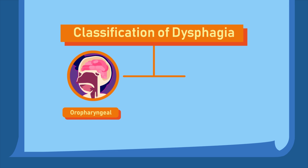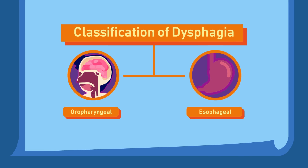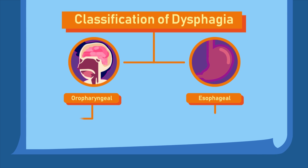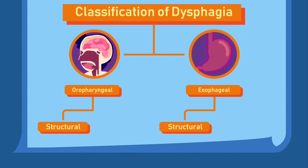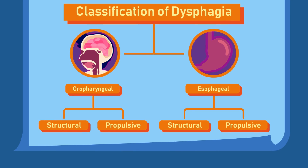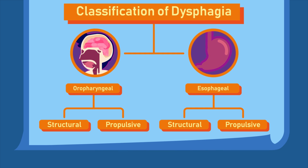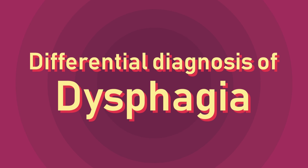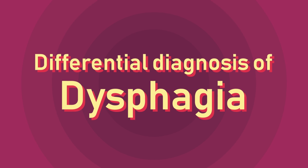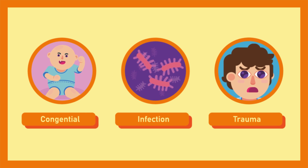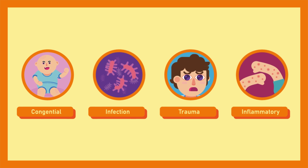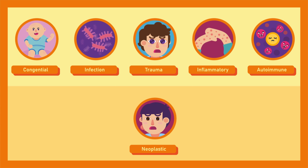Dysphagia is classified according to site — whether it is oropharyngeal or esophageal — and the type of disorder, whether it is a structural disorder or a motility or propulsive disorder. The differential diagnosis for dysphagia can also be divided according to cause: congenital, infections, trauma, inflammatory, autoimmune, neoplastic, neurological, motility disorders, iatrogenic, and mechanical causes.